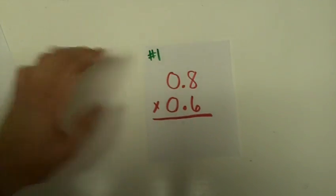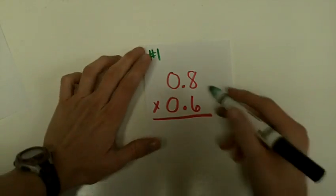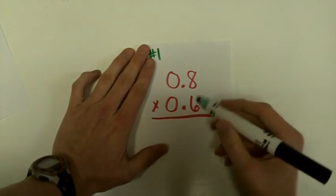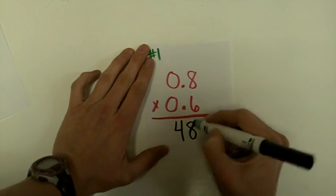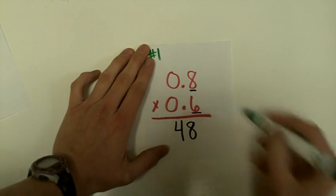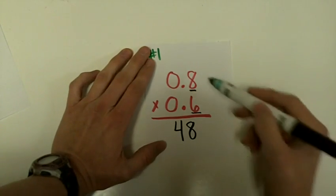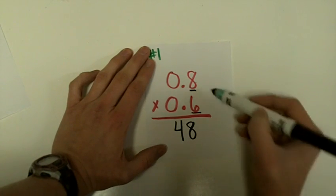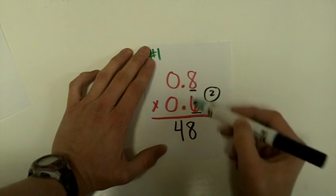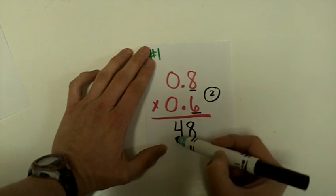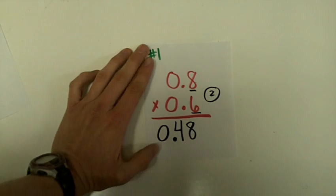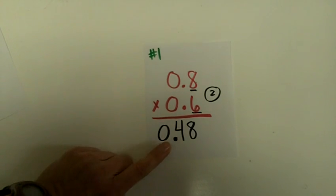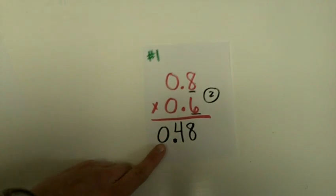Here's my first one: 8 tenths times 6 tenths. Forget about your decimal for now — 6 times 8 is 48. Then notice I have 1, 2 numbers after the decimals in the problem — 1 here and 1 here. I pretend the decimal is at the end and move it over 2 times, because I have 2 numbers after the decimal. So my answer is 48 hundredths — and I put a 0 in front of the decimal point.